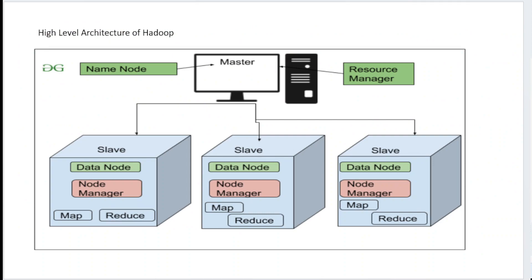This is the basic architecture of HDFS. The master node is the NameNode, and one Resource Manager — called YARN, Yet Another Resource Negotiator — is also present. In the slave nodes, there are DataNodes, Node Managers, and Map and Reduce functions. All these functions are implemented in the slave nodes. This is the high-level architecture of Hadoop.